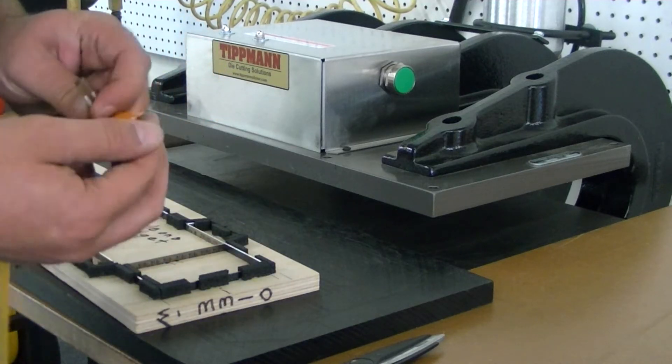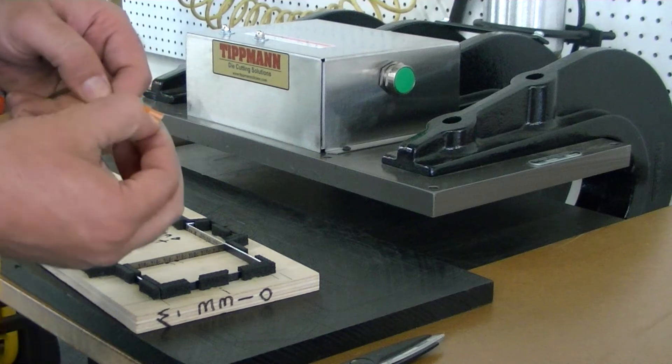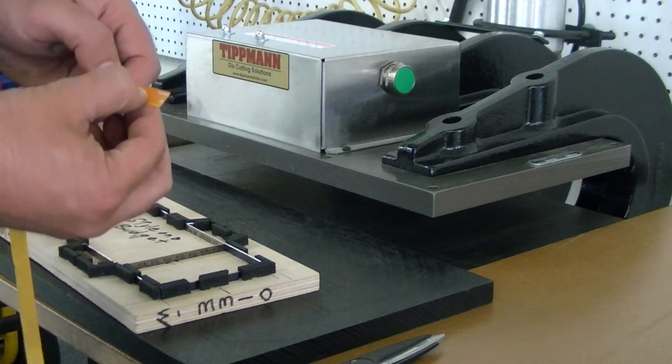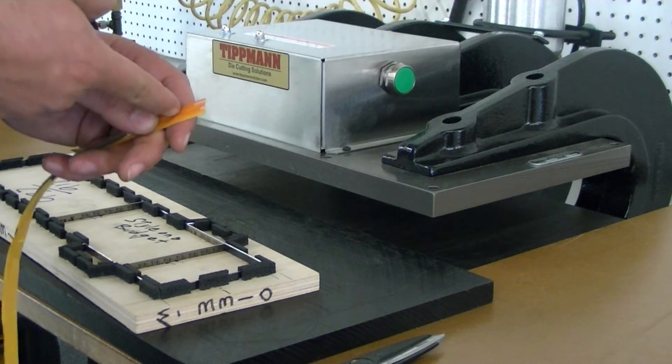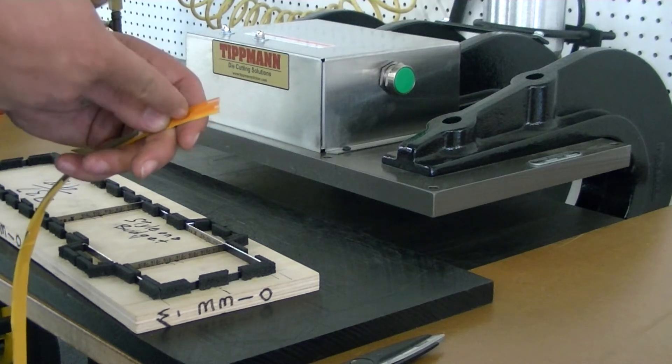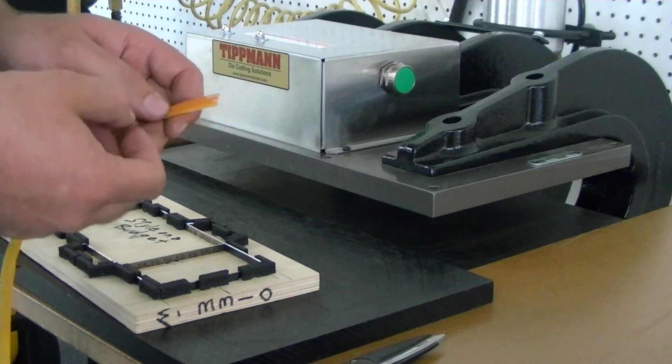When you pull that back, you can see the matrix. The matrix is two pieces of dense plastic and your creasing blade fits in between those two pieces of matrix and pushes it down in there, giving you a really crisp, tight crease.